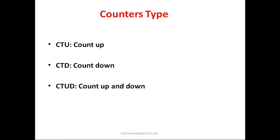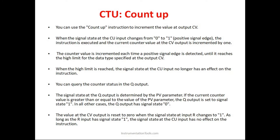The first counter is the up counter. Let us see its working principle. Here we have an important terminology called CV, which is basically the current value of the counter. The counter counts the number of pulses, incrementing whenever a pulse is given. Whenever the output goes from low to high state — from 0 to 1 — it counts that transition.